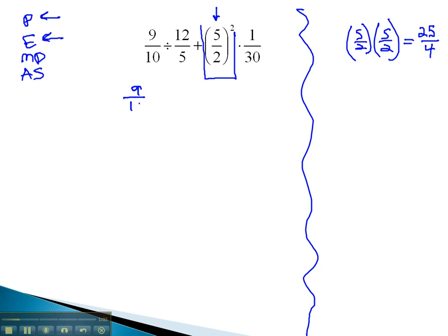Rewriting the problem, we now have 9 tenths divided by 12 fifths, plus when we squared the 5 halves, we ended up with 25 fourths times 1 over 30.